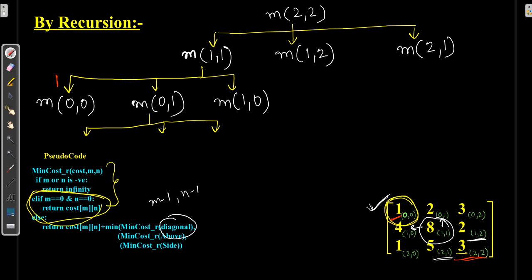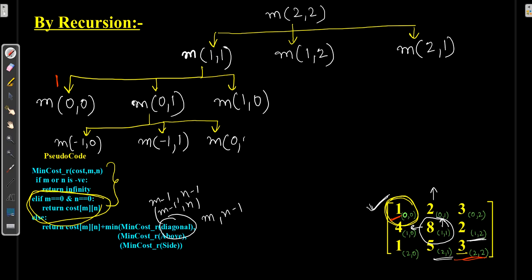The above element of (0,1) is M-1, N which becomes (−1, 1), and the third side element is M, N-1 which is (0, 0). The second base condition is: if either M or N is negative — that is, if the column or row index is negative — the function returns infinity.